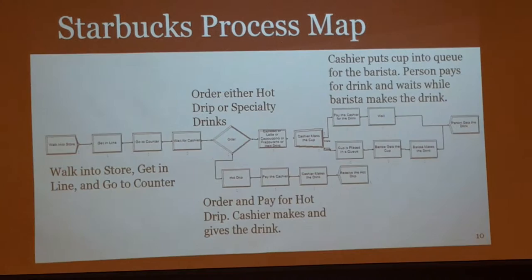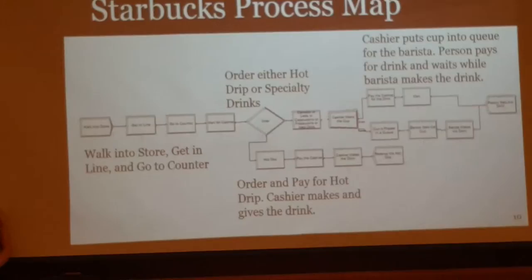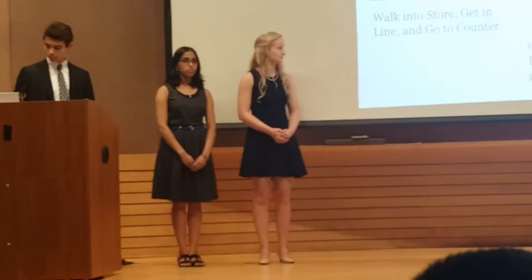This is the Starbucks process map, which shows the processes that customers go through to receive their drinks. First, the customer would walk in the store and get in line. Then they would go up to the cashier and order their drink. If they ordered a hot drip coffee, which is a pre-made stock hot coffee, then the cashier would make the drink and give it to the customer. But for any other specialty drink, the cup was passed to a barista who would make the drink and give it to the customer.